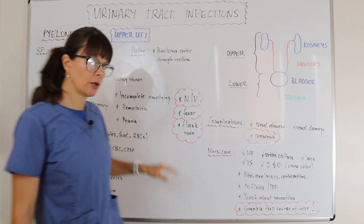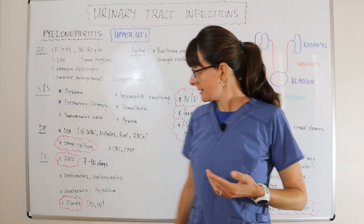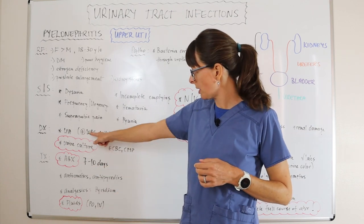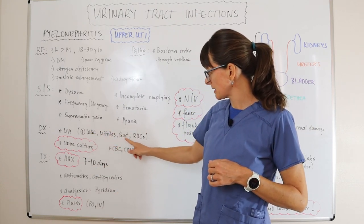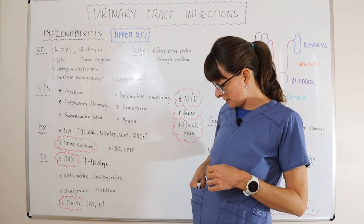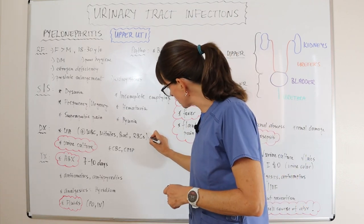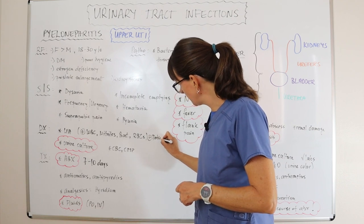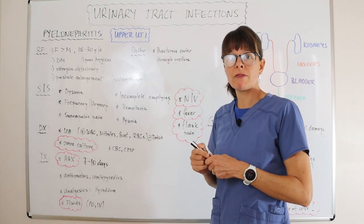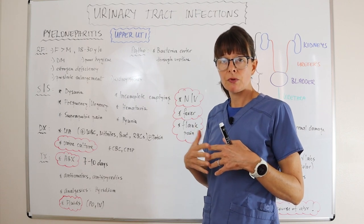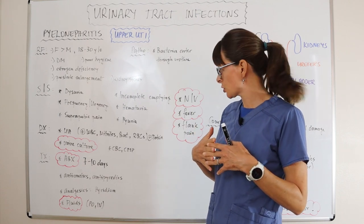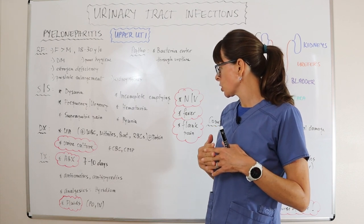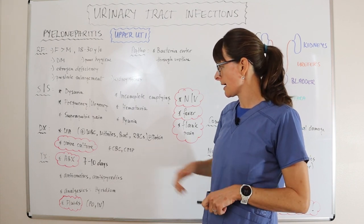For diagnostic tests, we want to check a urinalysis, which is usually positive for white blood cells, nitrates, bacteria, and red blood cells. It also may contain some protein if there has been some involvement with the kidney — if the kidney filtration membrane has been damaged by the bacteria from the urinary tract infection.